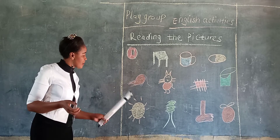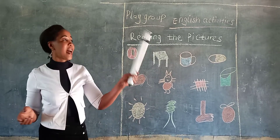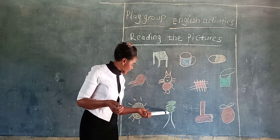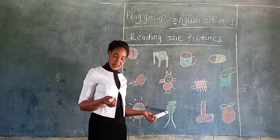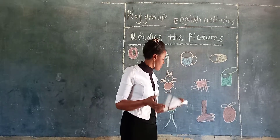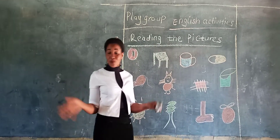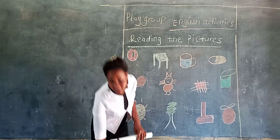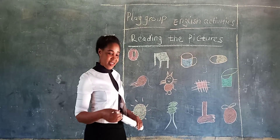Lana, what is this? This is a tree. Thank you. What is this? This is a leg. I know all of you have legs. Can you touch your leg? Yeah, this is what you call a leg. Thank you, Lana.